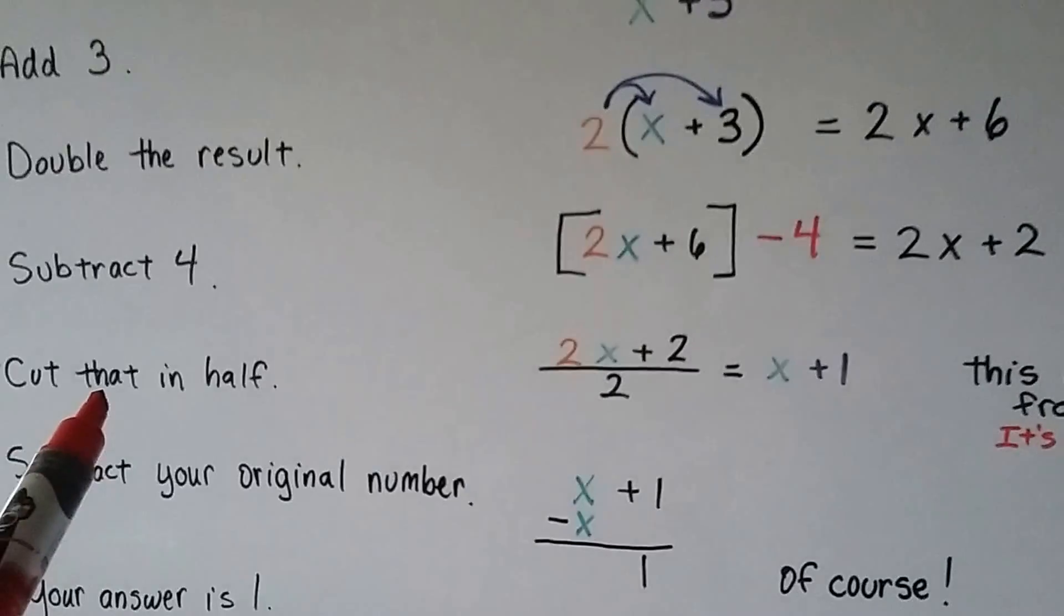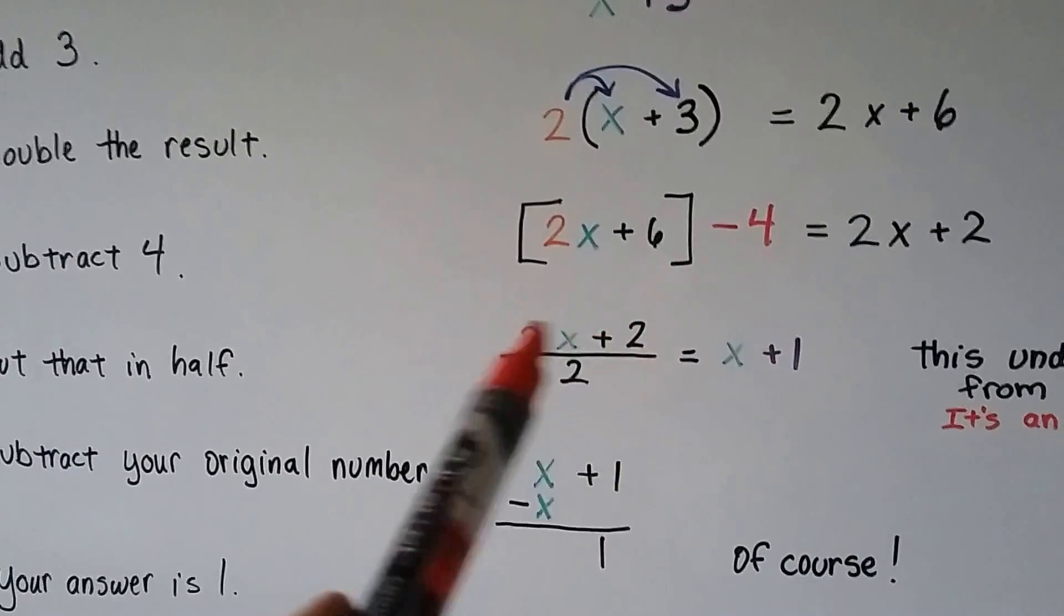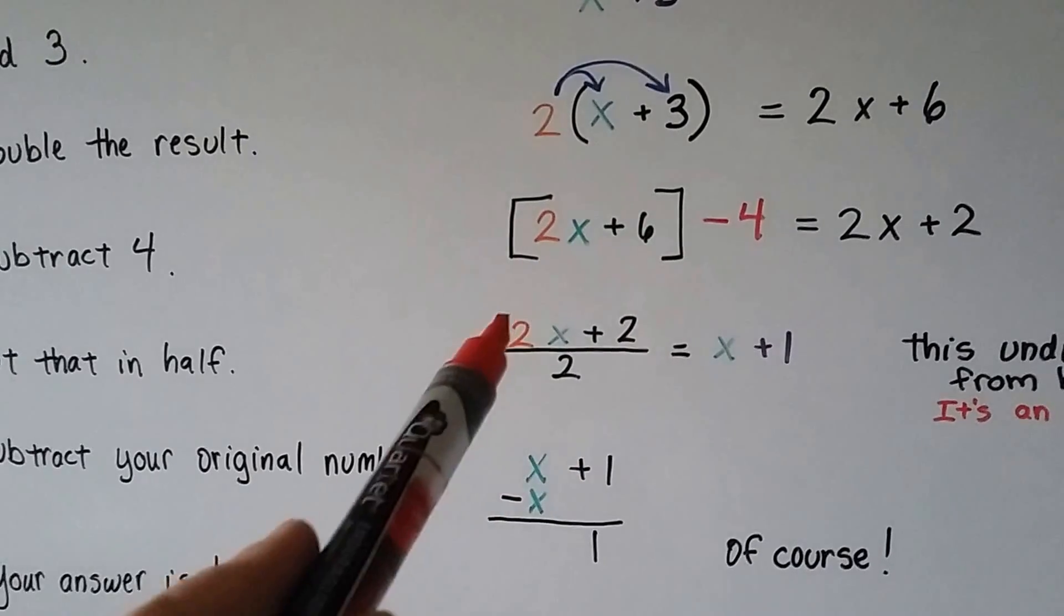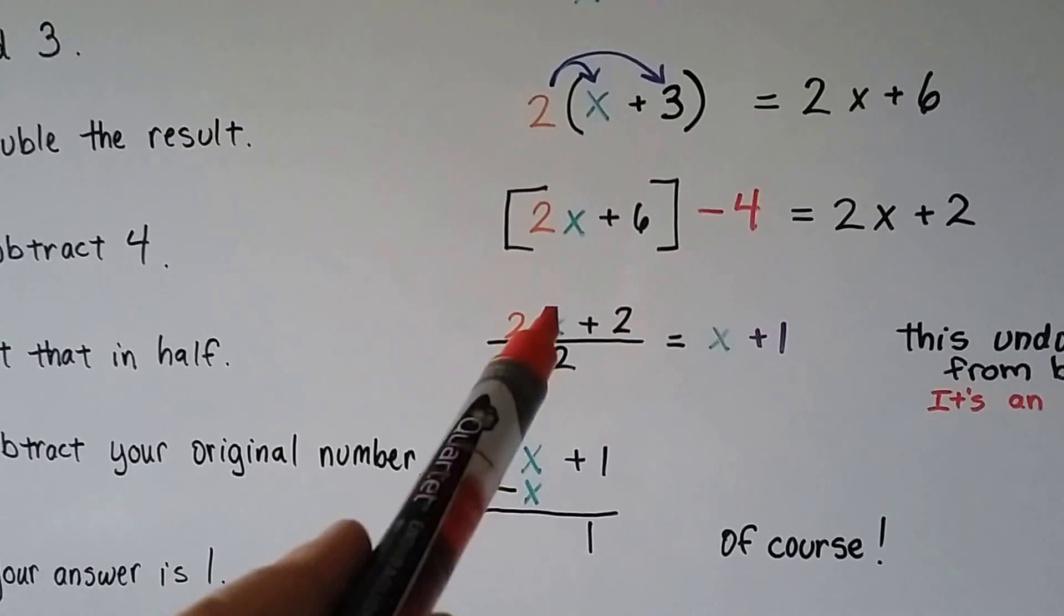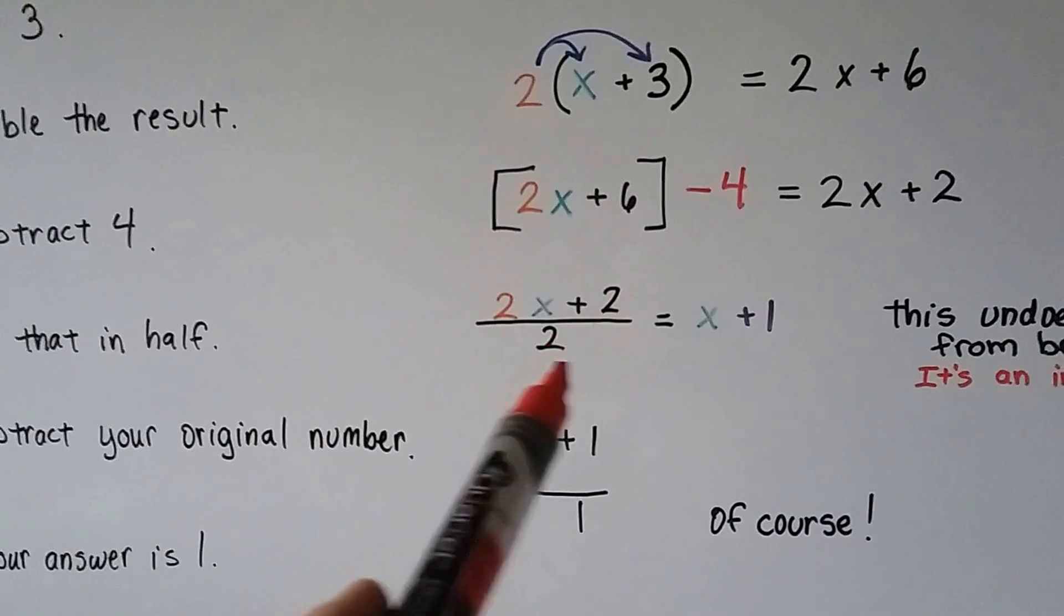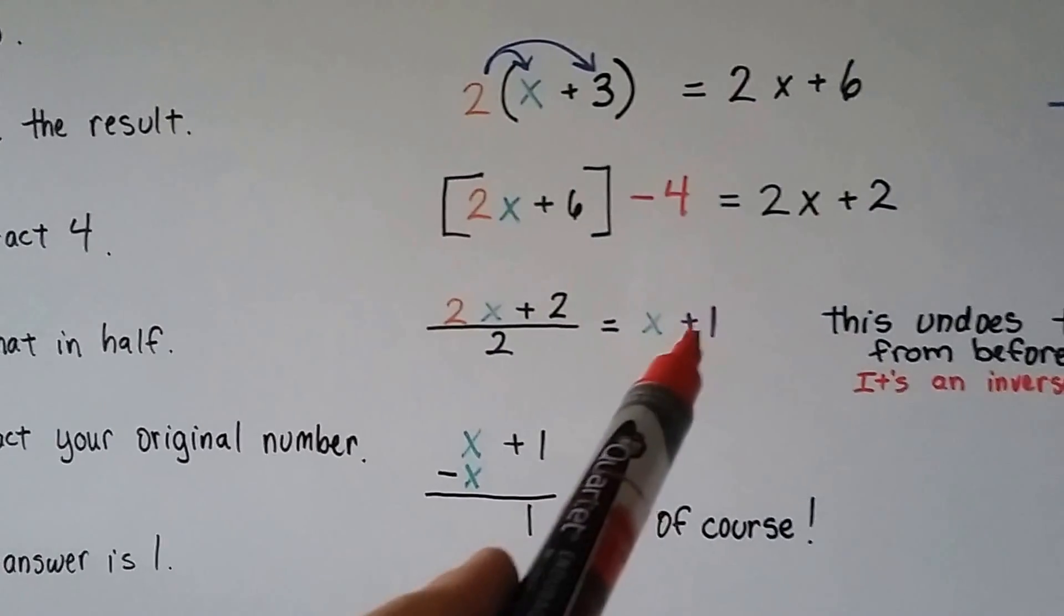And then it tells us to cut that in half. So we need to divide 2x plus 2 by 2. 2 divided by 2 is 1, so we have 1x. And 2 divided by 2 is 1, so we end up with x plus 1.